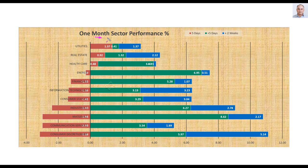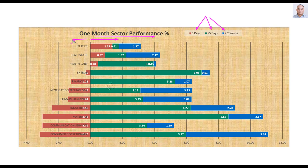Here I look at one-month sector performance. I am looking at the 11 sectors across 3 review periods: the red bar represents this week's performance, the green bar the previous week, and the blue bar performance from two weeks before that. Any bar coming to the right of the zero line shows the sector went up; any bar to the left shows the sector went down. This week, 3 sectors went up — utilities, real estate, and healthcare — all of which are defensive sectors.